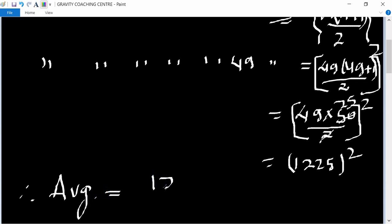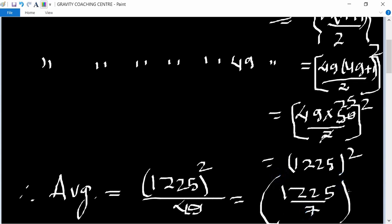Sum of observations is 1225 whole squared upon number of observations is 49. So equal to, 49 is the square of 7, so 1225 upon 7 whole squared. And now cancel by 7, so 7 one time and 7 seven times and 7 five times, so 175 squared.